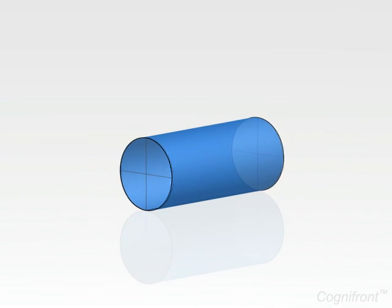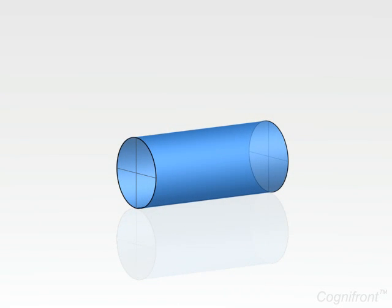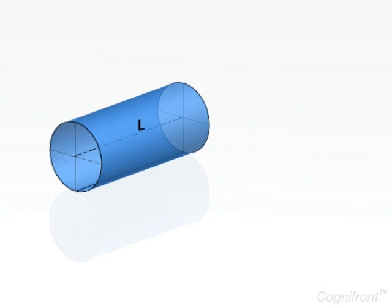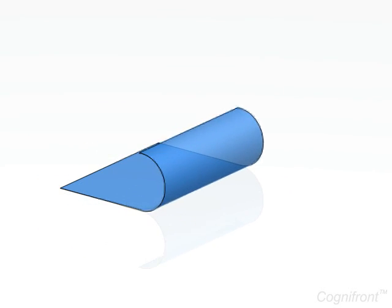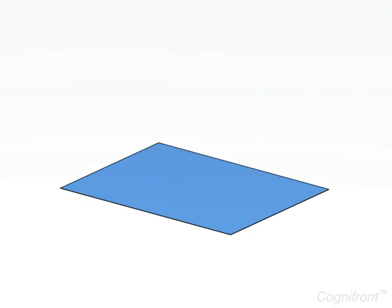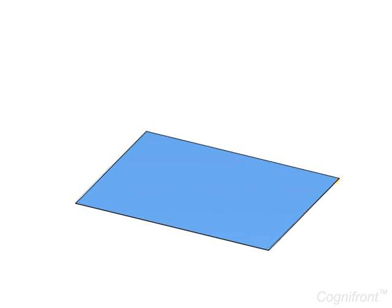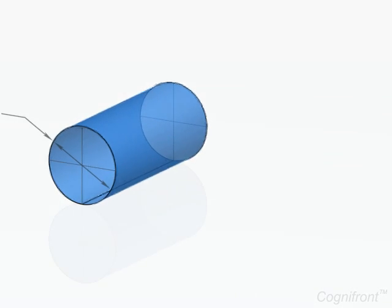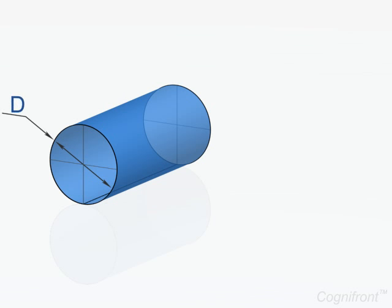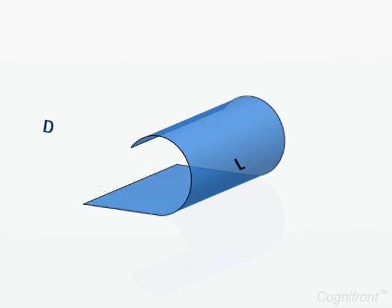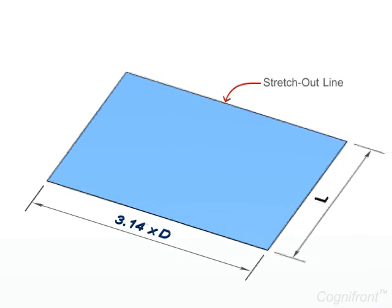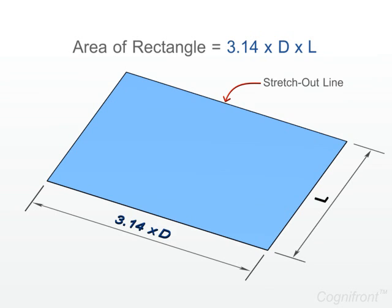A cylinder is a three-dimensional object with a circular cross section having certain axis length L. The development of a cylinder is the area covered by rolling out the cylinder on its curved surface over a plain surface. So, if the diameter of the cylinder is D and its axis length is L, then its development is the area of rectangle of size 3.14 into D into L.